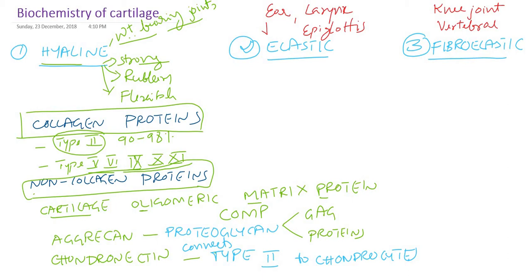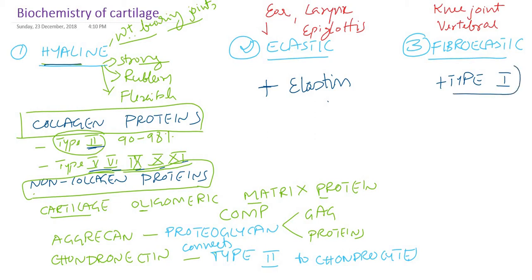In elastic cartilage, all the above components are present, but in addition, it also contains a protein called elastin. In fibroelastic cartilage, in addition to the common components, it also contains type 1 collagen. Whereas in hyaline or articular cartilage, we see type 2 as the major collagen along with minor types 5, 6, 9, 10, and 11 — and no type 1 collagen.